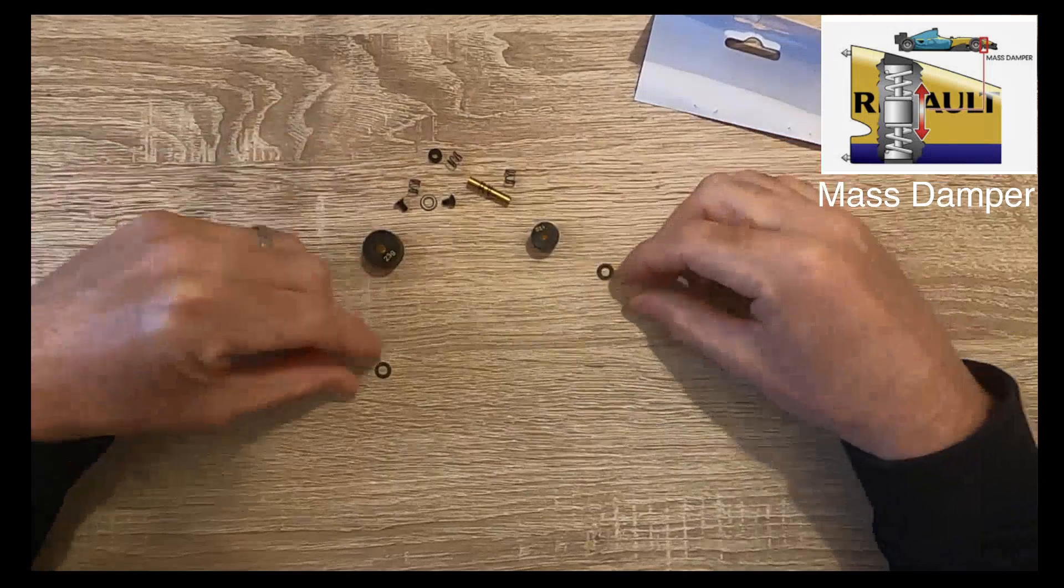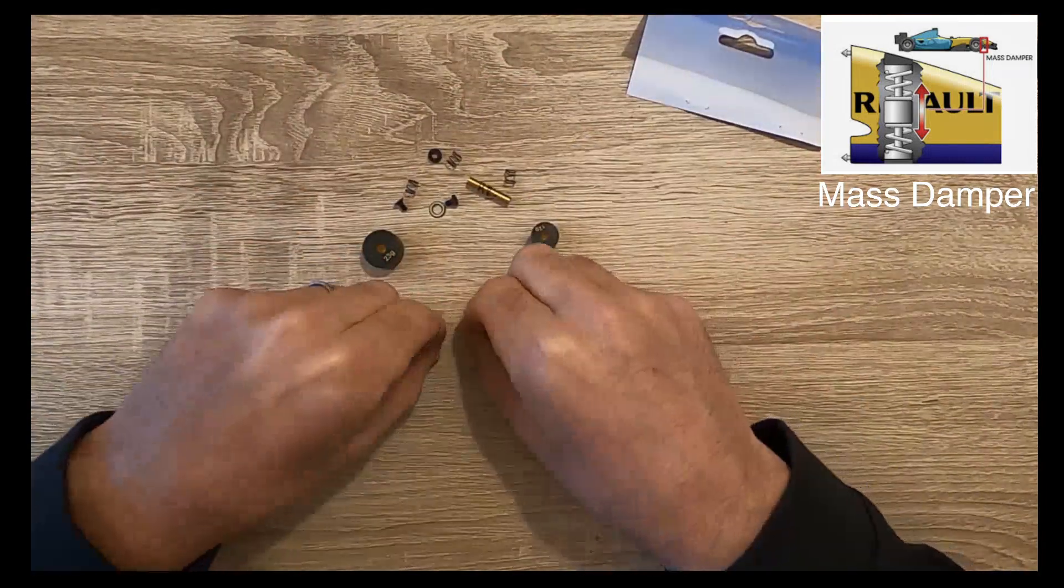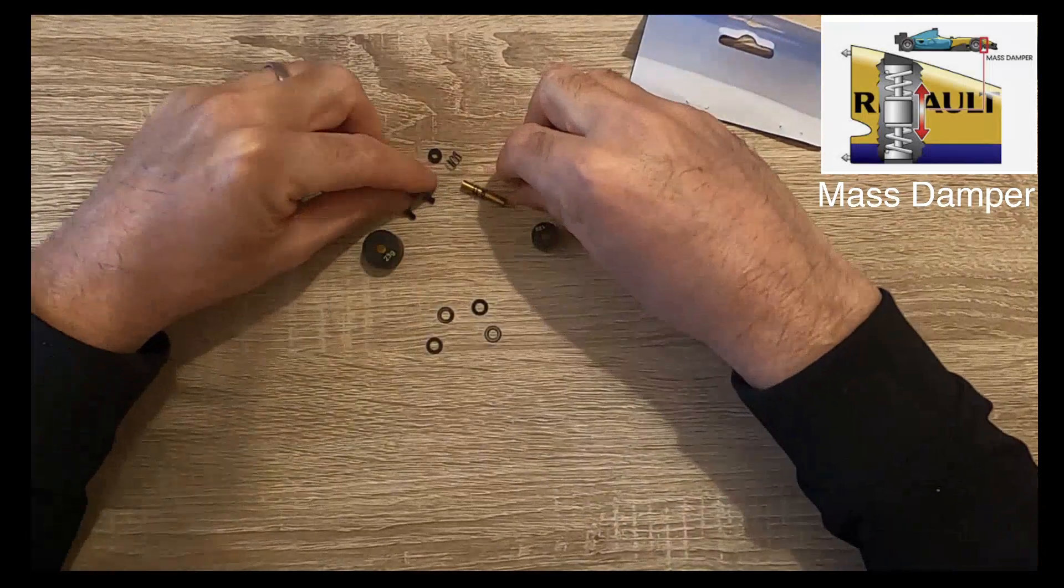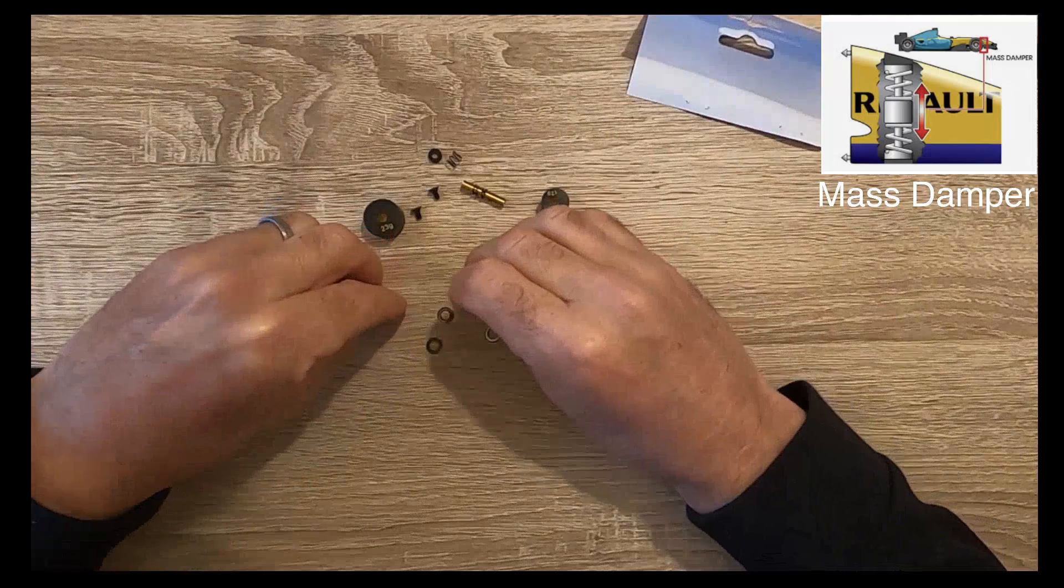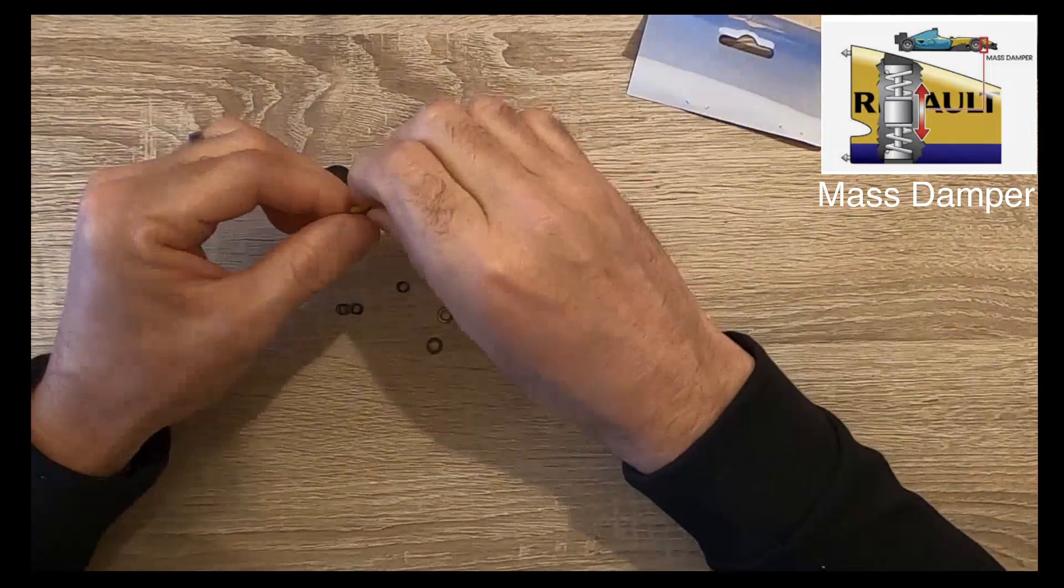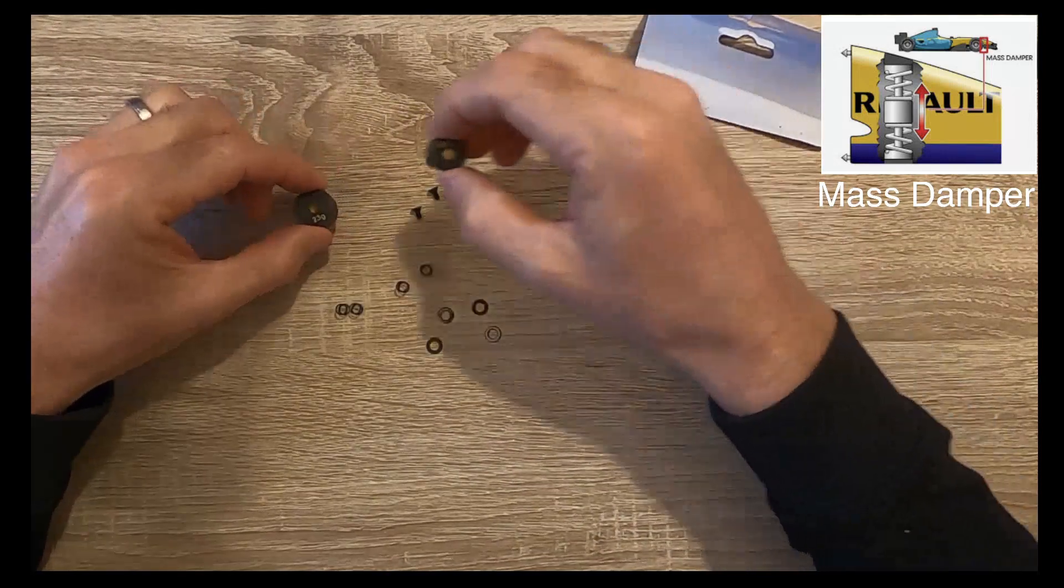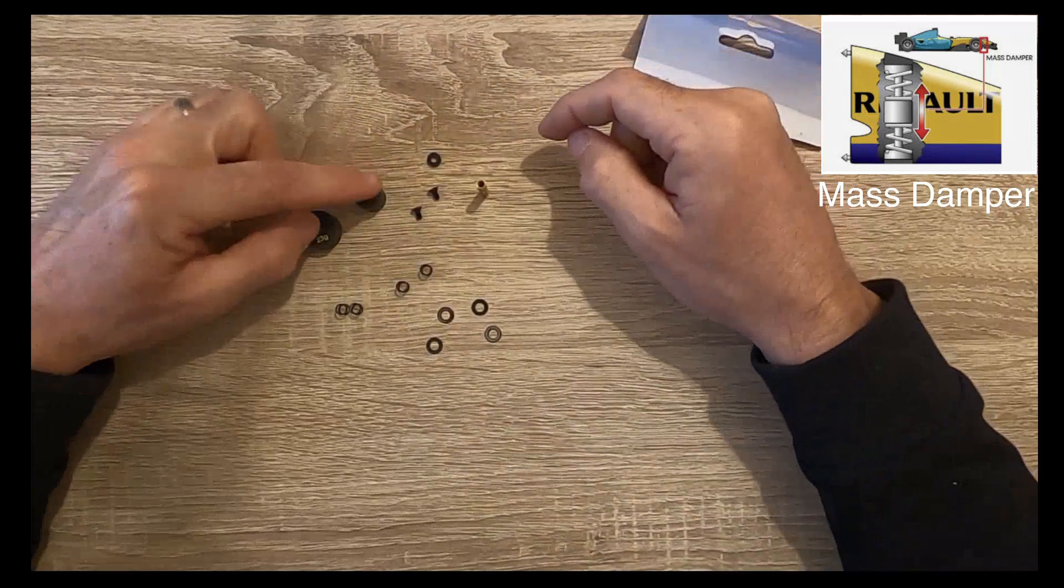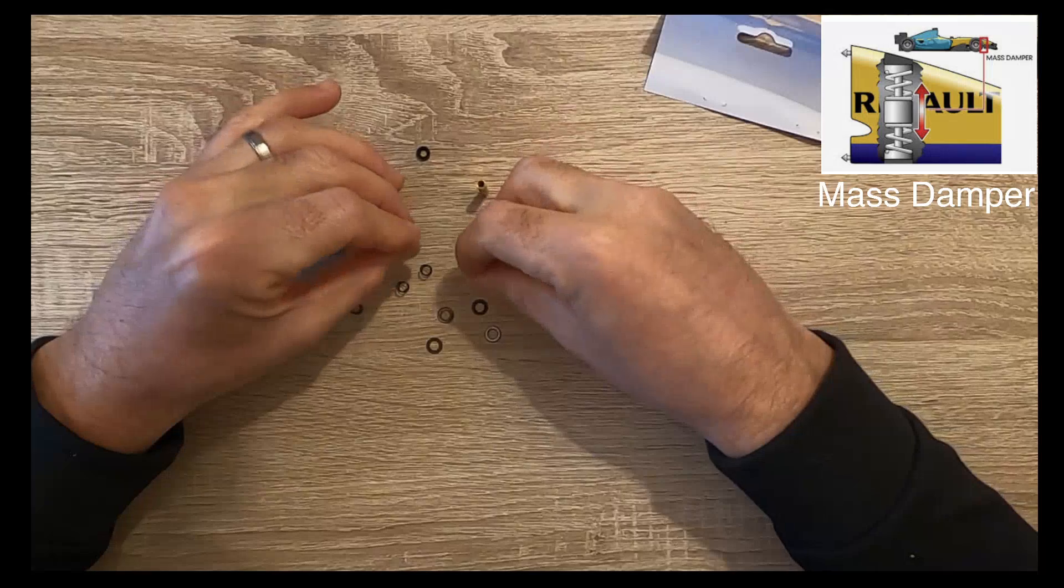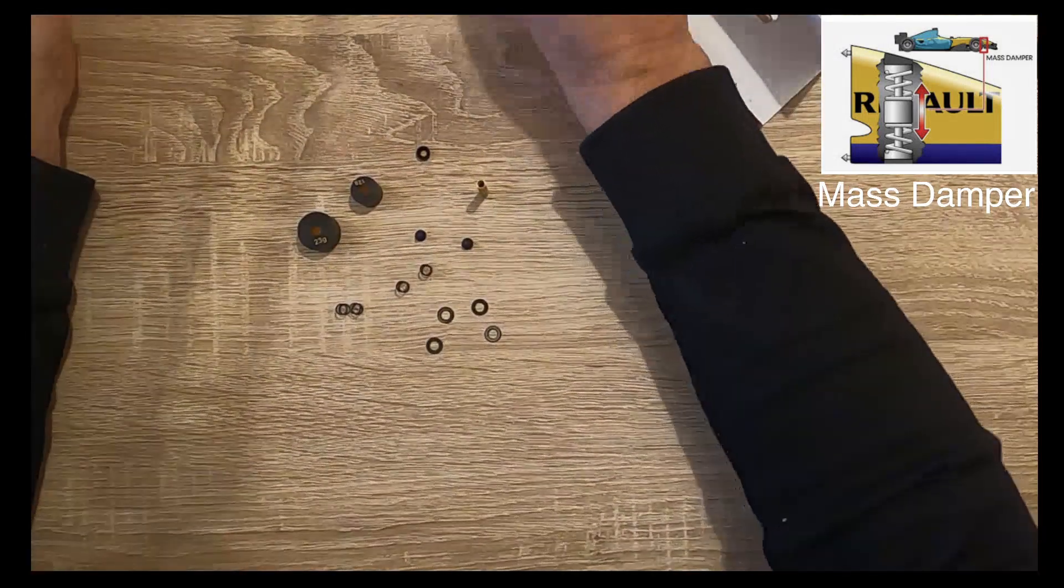So in the kit you get four washers and you get two sets of springs - you get green and you get red or pink, I'm not sure what the color is. A couple of weights, you get a countersunk washer there and a couple of countersunk screws.